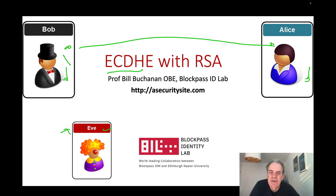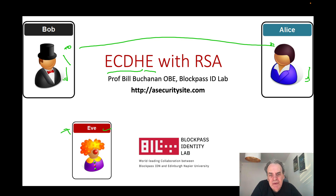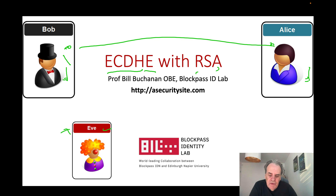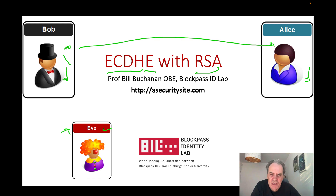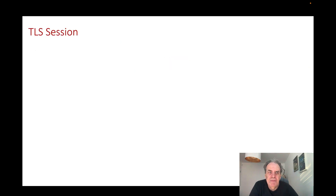The most typical method we use is Elliptic Curve Diffie-Hellman, derived from the Diffie-Hellman method but using elliptic curve methods. The E stands for ephemeral, meaning we create a unique key each time, and a hack of any of the keys will not breach the previous keys or the ones that follow. If we want to stop Eve from pretending to be Bob or Alice, we create an RSA signature — so we're using key exchange and a signature method to prove that Bob is Bob and Alice is Alice.